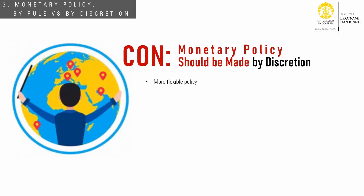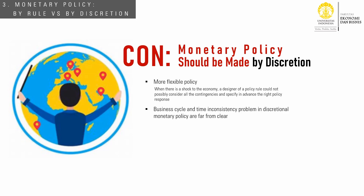In response, the proponents of monetary policy by discretion emphasize the importance of flexibility. When there is a shock to the economy, for example, a designer of a policy rule could not possibly consider all contingencies and specify in advance the right policy response. They also argue that both the political business cycle and the time inconsistency problem are far from clear. Interest rates could rise significantly during one election year but also decline during another. Experience also shows that low inflation does not always require that the monetary authority be committed to policy rules.